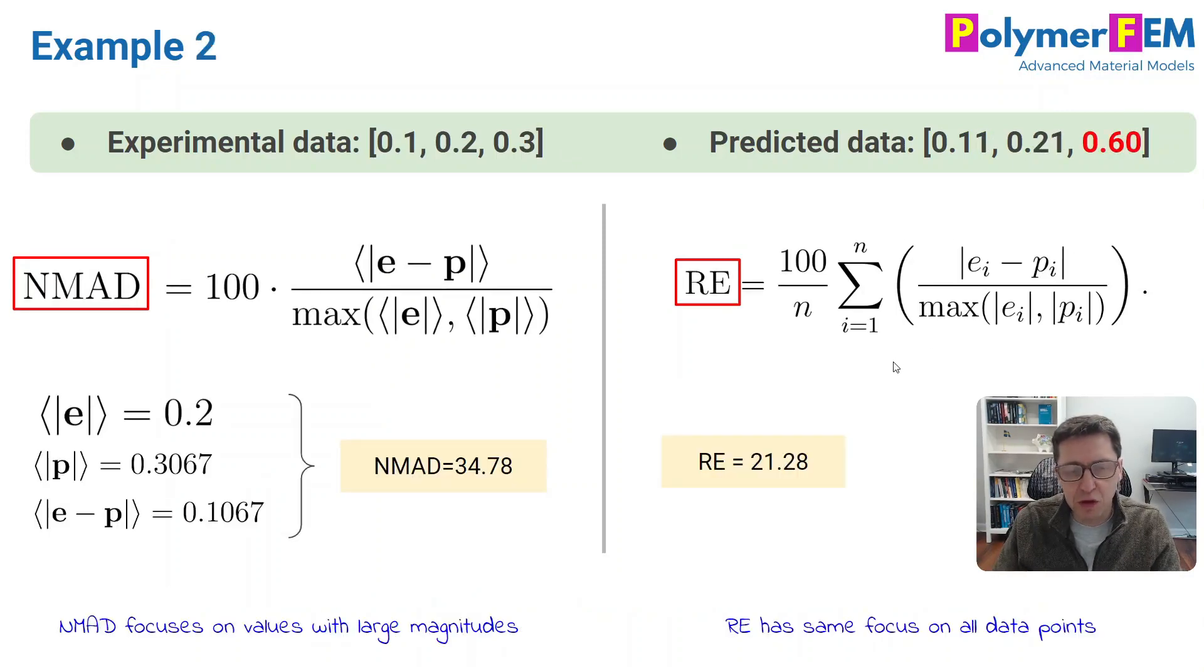Here's another case that is more surprising. We have three experimental data points, 0.1, 0.2, and 0.3, and in this case there was a large error in the final data point. The error was 100 percent, while the other two data points had very small errors. In this case, the NMAD fitness will have an error about 34 percent because it emphasizes the large numbers. The relative error will take equal weight to all three numbers, so the actual value will be lower than NMAD because the first two data points have lower error. It takes equal focus on all data points. That's a big difference between 21 and 34.